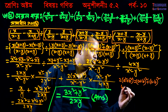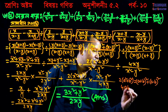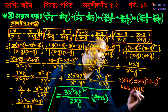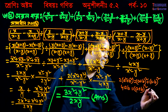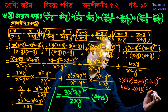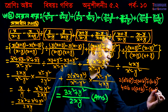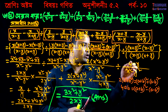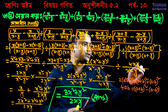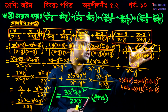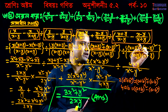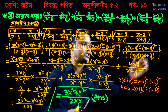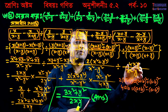Our sutra is 4ab. The sutra is: a plus b whole square minus a minus b whole square equals 4ab. Look, we have 4xy. The sutra gives us: x plus y whole square minus x minus y whole square equals 4xy.